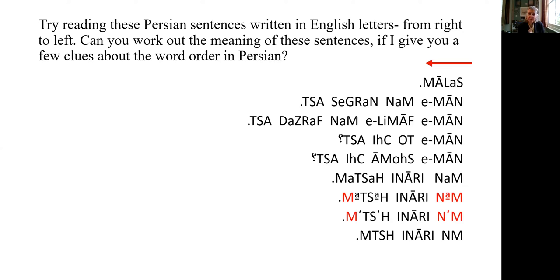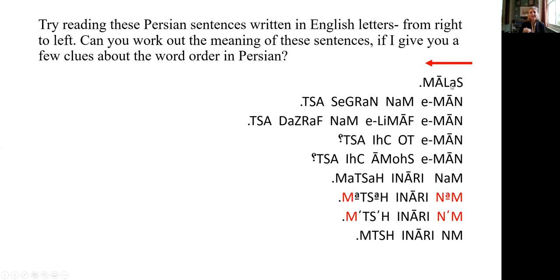So if you are ready to take those on board, let's read a little bit of Persian. Can you get your eyes used to reading these Latin letters from right to left? That's the direction of the Persian language, as is Arabic. The short vowels — all the lowercase letters — will soon be deleted. The consonants are in capital letters, and the long vowels like O or E are written in and are never deleted.